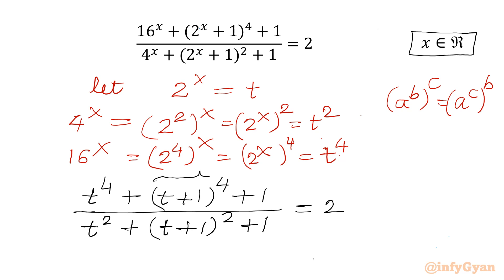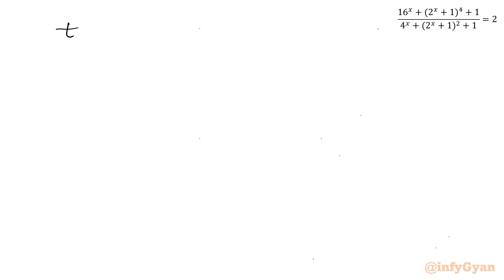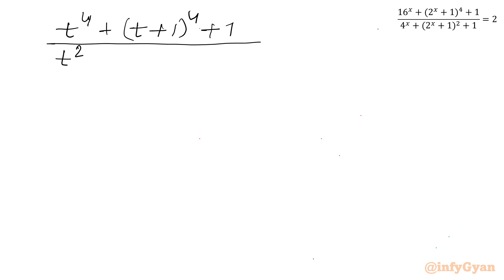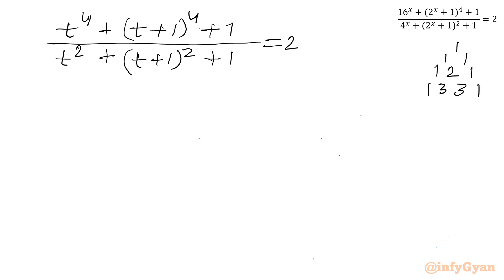Now here we have power 4, so I will use Pascal's triangle. Let us write the coefficients for the expansion. For power 4 the Pascal's triangle rows are: 1 1; 1 2 1; 1 3 3 1; 1 4 6 4 1. So our coefficients are 1, 4, 6, 4, 1.